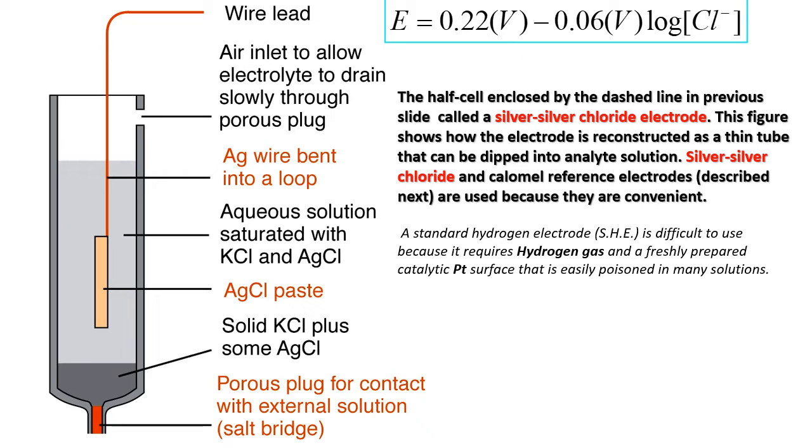Then at the end, it's covered with silver, and on top of silver you have a layer of molten silver chloride added to the surface. Inside there is solid KCl with some additional silver chloride. And at the bottom there is a porous plug for contact with external solution instead of just usual salt bridge.